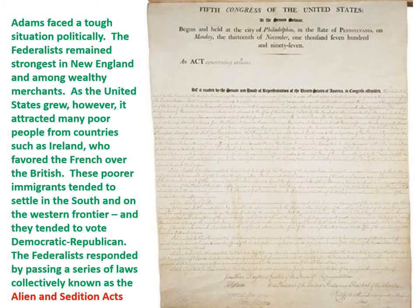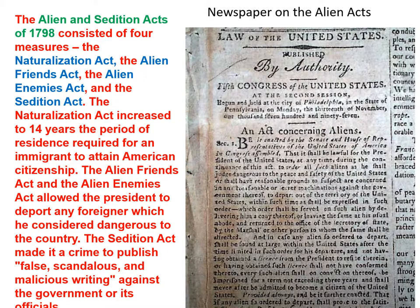Adams also faced a tough political situation. The Federalists remained strongest in New England and among wealthy merchants. As the United States grew, it attracted many poor people from countries such as Ireland, who had no love of the British and favored France. These poor immigrants tended to settle in the South and on the Western frontier — Democratic-Republican strongholds — and they tended to vote Democratic-Republican. The Federalists, worried this trend would cost them future elections, responded by passing a series of laws collectively known as the Alien and Sedition Acts of 1798.